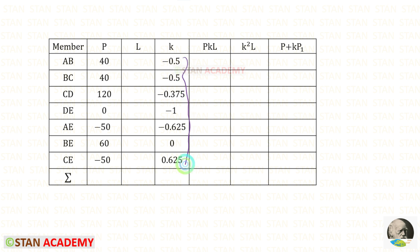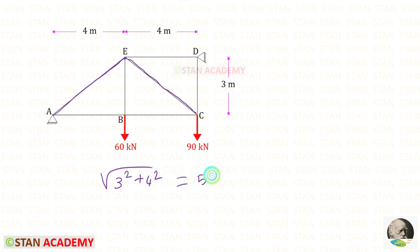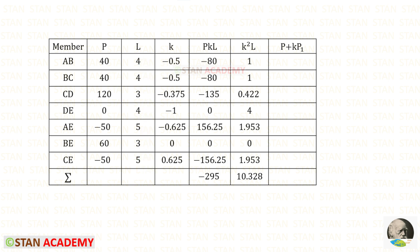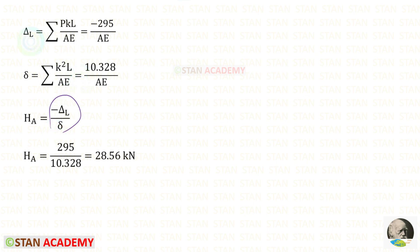Now we find the length of the members. Length of AB, BC, and ED is 4 m; length of BE and DC is 3 m. For the inclined members AE and CE, using Pythagoras theorem: root of (3² + 4²) = 5 m. Entering all lengths, we then find P·K·L and K²·L for each member, sum them all up. Since the question does not mention area or Young's modulus, we assume AE is the same for all members and it cancels out.